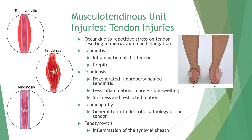Repetitive stress on a tendon can result in microtrauma and elongation, causing fibroblast influx and increased collagen production. This repeated microtrauma may evolve into a chronic muscle strain due to reabsorption of collagen fibers.